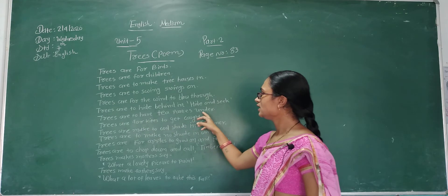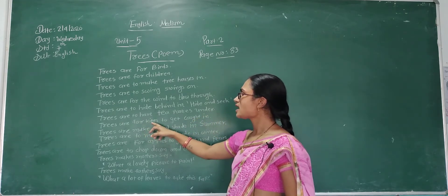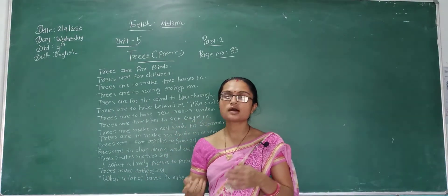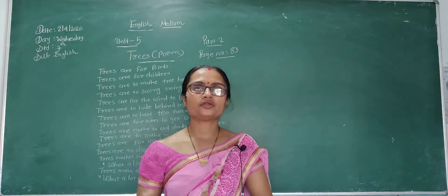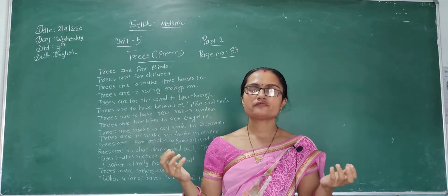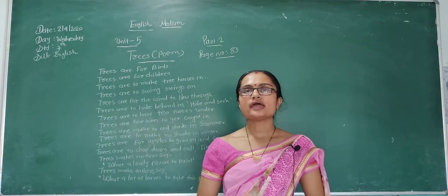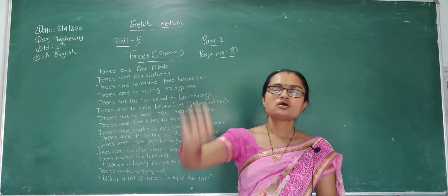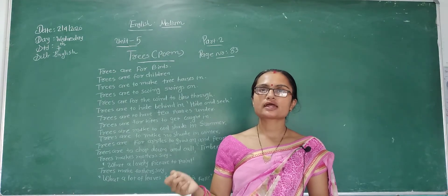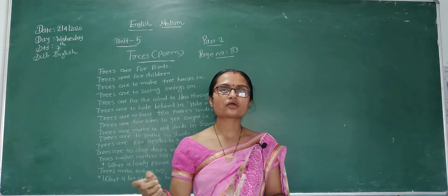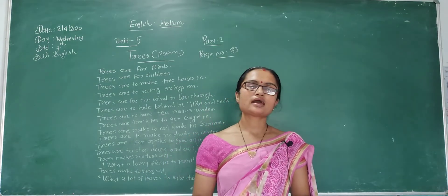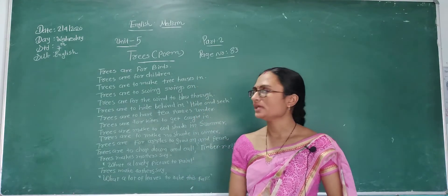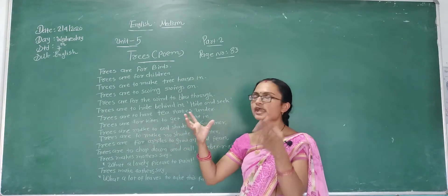Trees are to have tea parties under. Trees are for kites to get caught in. We celebrate a kite festival and we fly kites. If the string is cut, our kite hangs on the branches. So trees are for kites to get caught in.